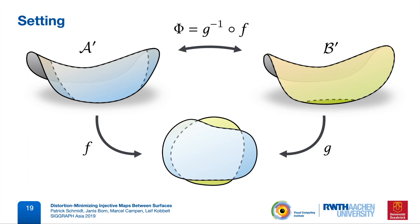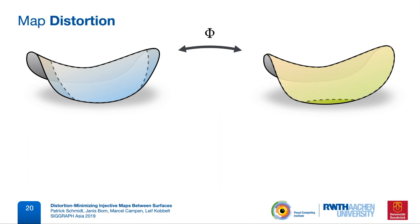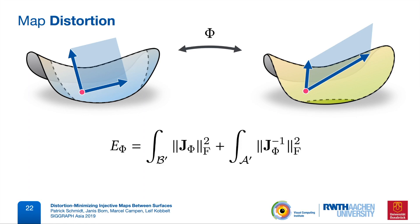Let's start by choosing an objective function. Our map is a purely intrinsic object, so we would like to optimize an intrinsic distortion measure, and we use the symmetric Dirichlet energy here as an example. At each point, it equally measures the L2 stretch in both the forward and the backward direction of the map. This is a pointwise measure that we then integrate over both surfaces.